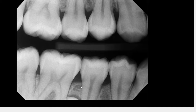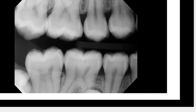Now let's take a look at the molar bitewing of the same area. You can actually see that unknown lesion a little bit better here. There's that opacity which appears to superimpose with the mesial root of number 30, and then the radiolucent rim. Additionally, on this radiograph you can also see the crown of third molar number 32.